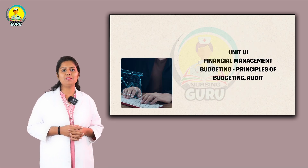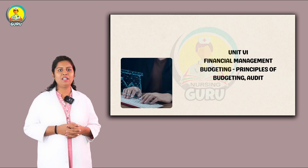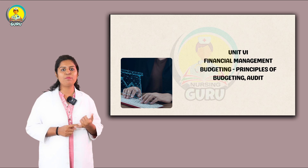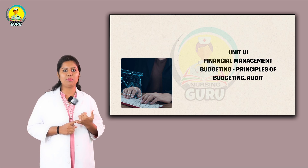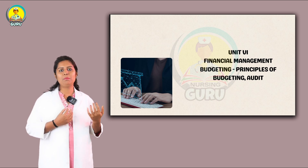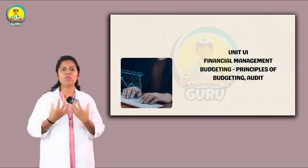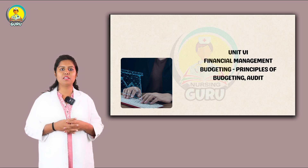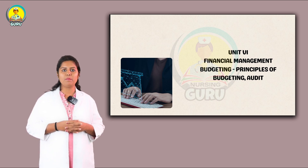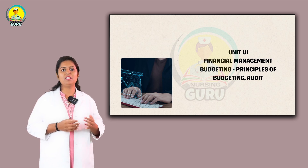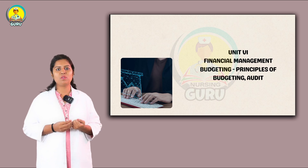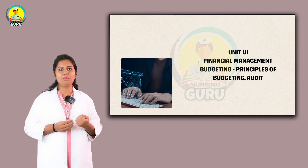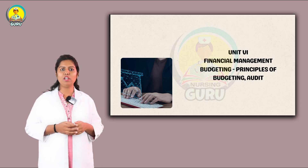Next is Unit 5: Material Management. Under this we have principles of material management — how you will manage materials, how you will put in the indent, how you will do that — everything comes under this. This is a 5-mark question. Then quality control, inventory, and care of equipment — these are 2-mark questions. The role of nursing personnel in material management may also be asked for 2 marks.